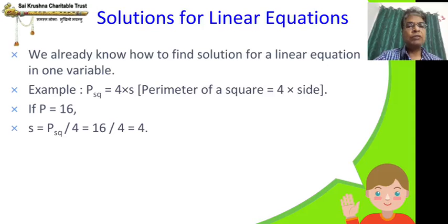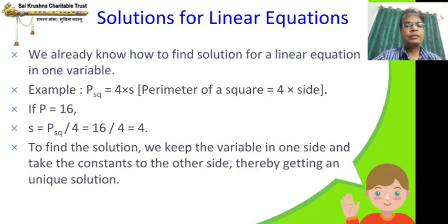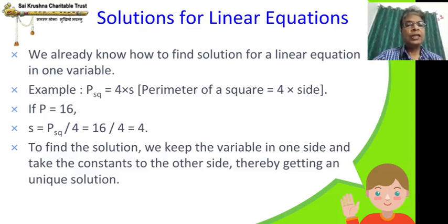P square equal to 4 into S. S is retained on the RHS and 4 is taken to the bottom — P square by 4 — therefore we get the answer 4. To find the solution, we keep the variable on one side and take the constants to the other side, thereby getting a unique solution. This is how we solve a linear equation in one variable.